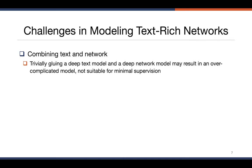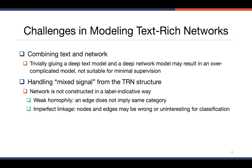There are two major challenges in modeling text-rich networks. The first is how to combine text and network together — if you just put a deep text model and a deep network model together, it may be overly complicated and not suitable for our minimal supervision setting. The second challenge is how to handle the mixed signal from the text-rich network structure. The network is not constructed in a label-indicated way. We identified two key properties: weak homophily, meaning two connected nodes do not necessarily belong to the same category, and imperfect linkage, meaning nodes and edges might be wrong or uninteresting for our classification task.